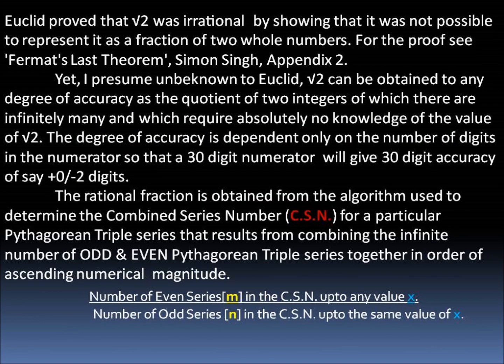Euclid proved that root 2 was irrational by showing that it was not possible to represent it as a fraction of two whole numbers. For the proof, see Fermat's Last Theorem by Simon Singh, Appendix 2.